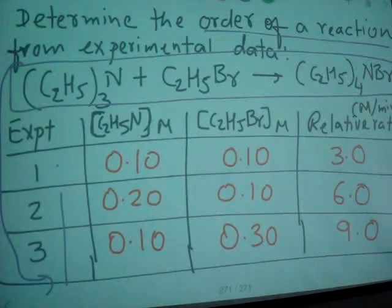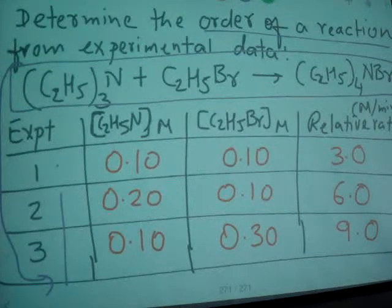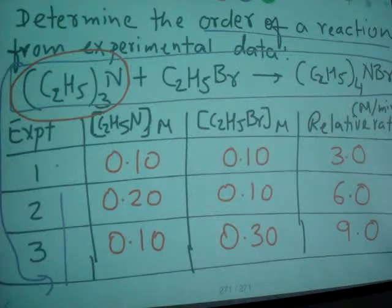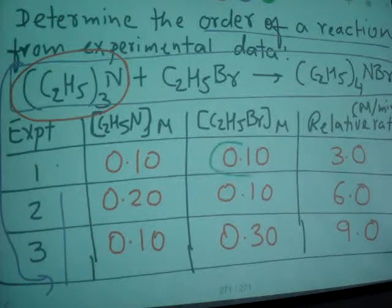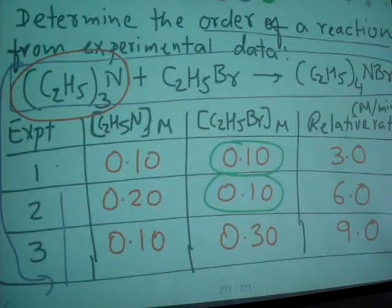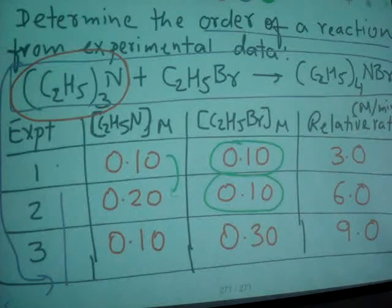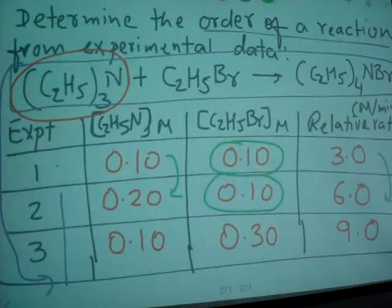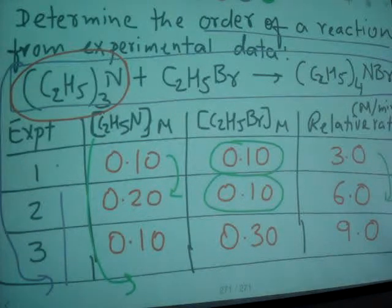Now when you look at the data, let's look at this reactant. When you compare experimental data set 1 and 2, the other reactant concentration, they are constant, but it's from 0.1 to 0.2 concentration increase for C2H5N. That's where the rate is doubling. So from that, we can say that it's in first order. So we can say C2H5N is first order.